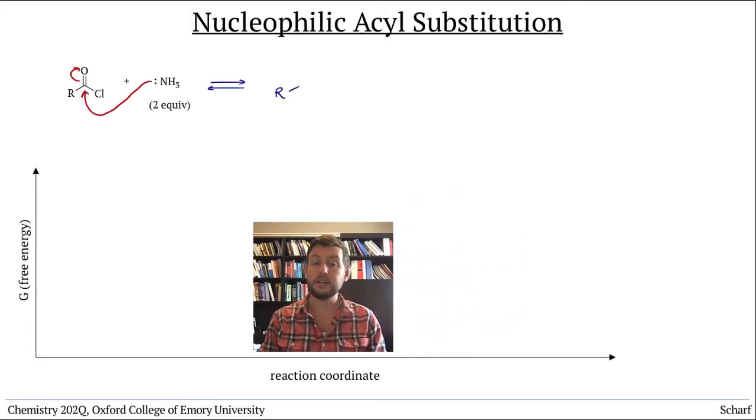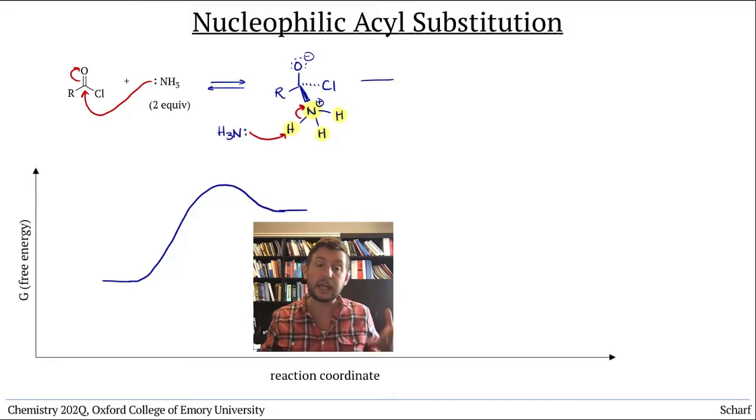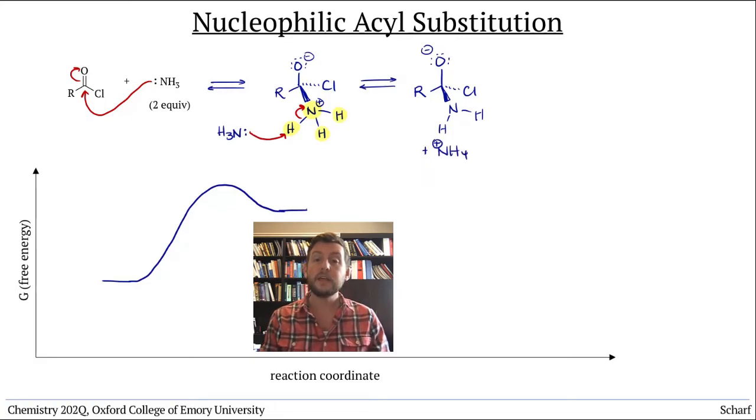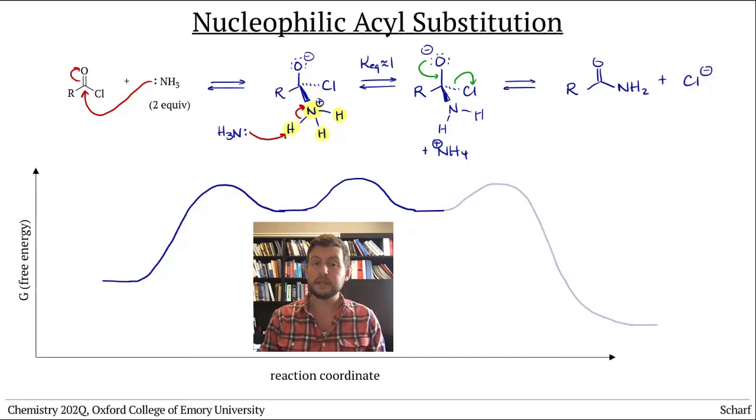The nucleophilic attack produces a tetrahedral intermediate. Since there are protons attached to this nitrogen, and those protons are relatively acidic, their pKa is about 9, this compound can be deprotonated by the amine, which is a weak base. This occurs rapidly and in equilibrium. The Keq for this step is about 1, since the amine is deprotonating an ammonium ion. The chloride leaving group could be kicked out from either of these two intermediates. Chloride is a great leaving group. Regardless of the order of these steps, the nucleophilic amine needed to be deprotonated in order to give a neutral uncharged amide as the product.